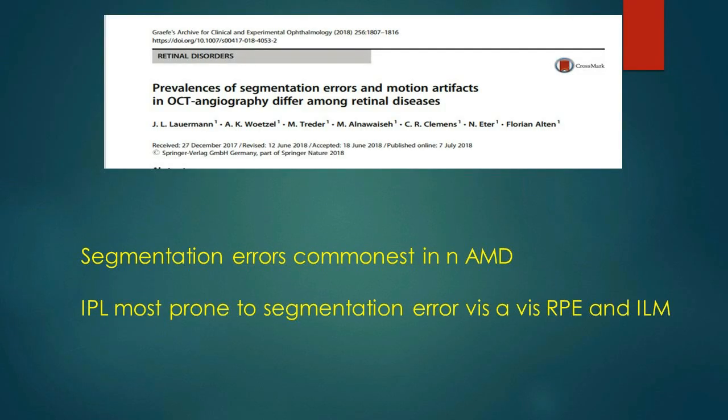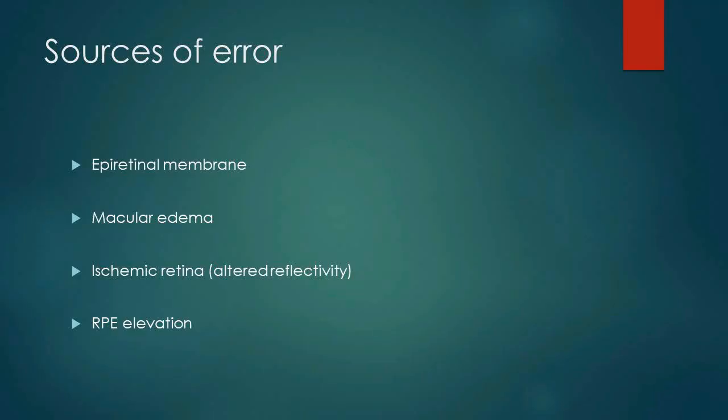Segmentation errors can happen in any type of retinal disease, but published literature shows they are commonly seen in neovascular AMD. The inner plexiform layer is most prone to segmentation errors compared to the retinal pigment epithelium and the internal limiting membrane. Common sources of error include epiretinal membranes, macular edema, ischemic retina with altered reflectivity, and retinal pigment epithelial elevation.